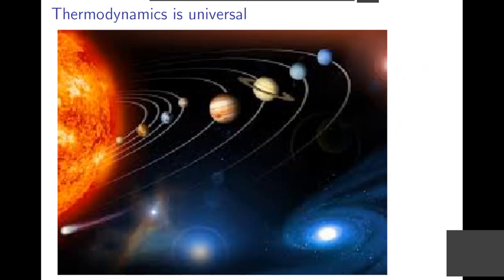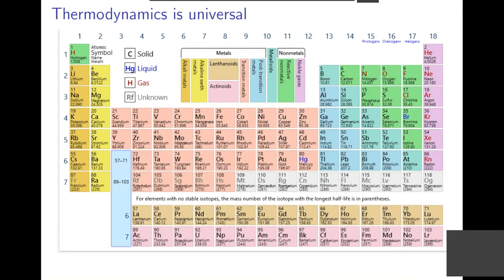Thermodynamics is a basic tool which we use for these predictions. Thermodynamics is a universal science. It applies everywhere more or less, and it applies for all elements in the periodic chart. So one can combine all these elements in order to produce the material one is interested in.